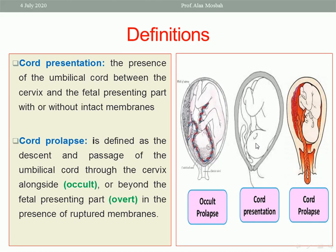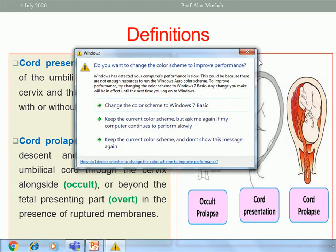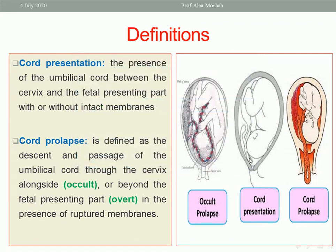What about cord presentation? Cord presentation, as seen in the picture in the middle, is where the umbilical cord lies between the presenting part and the cervix but does not pass through the cervix, whether the membrane is intact or ruptured. Of course, in cord prolapse the membrane is ruptured and the cord descends below the presenting part through the cervix down to the vagina. In cord presentation, the cord lies between the presenting part and the cervix whether the membrane is intact or ruptured, according to the recent definition by the Royal College.